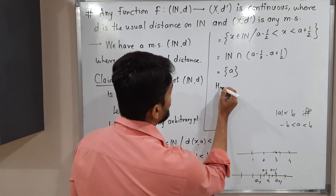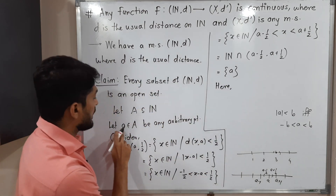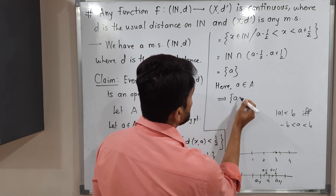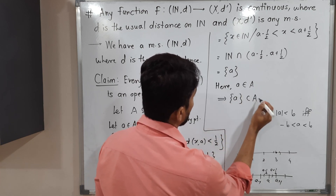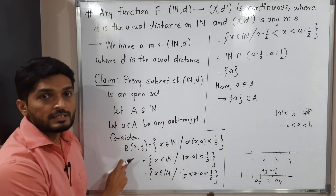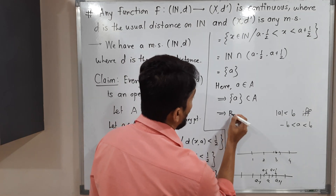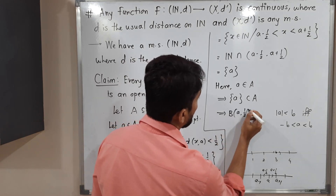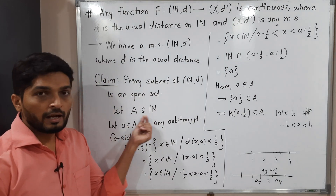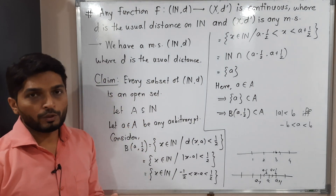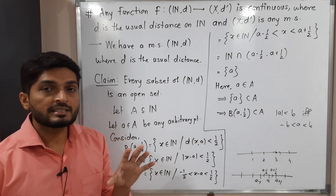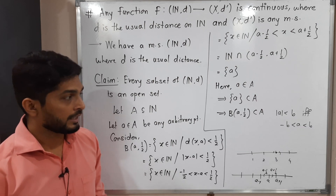We started with 'a' belonging to A. Therefore we can easily say the singleton set {a} is a subset of A. But we just proved that the singleton {a} is nothing but the ball with center 'a' and radius 1/2. Therefore, the ball with center 'a' and radius 1/2 is a subset of A.